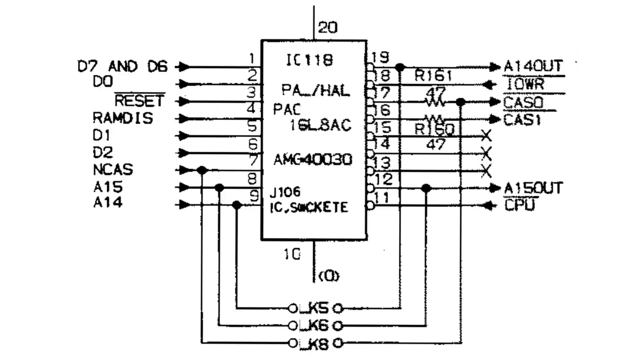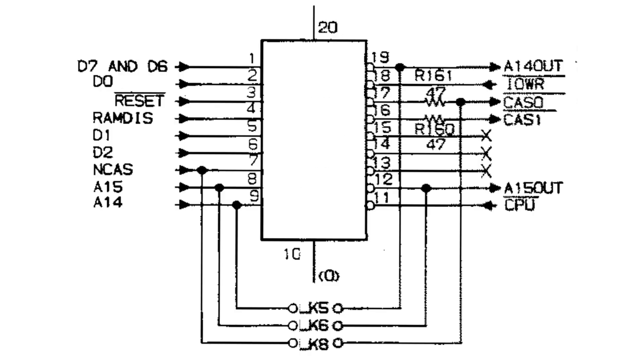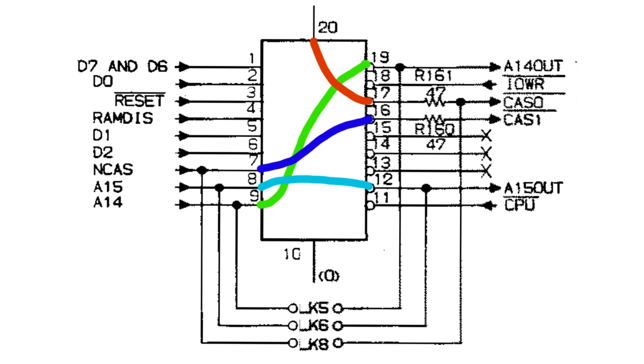The HAL logic is so simple that we could actually remove it, make a few bridges straight on the socket and force the Amstrad to use the whole second bank as the 64k for the Z80. At that point, we can run the regular memory test and catch any problems.